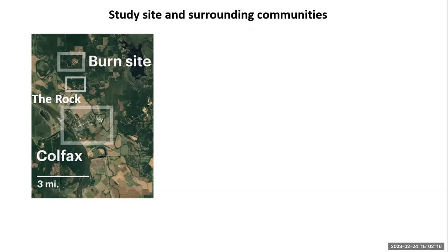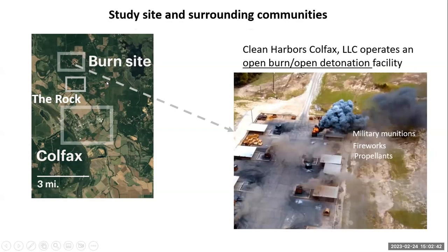I will start by introducing my research project site in Colfax. Colfax is a small town of about 2,500 people, with 90% of them living below the poverty line. Near Colfax, there is another small community called The Walk. In the neighborhood of these two communities, there is an open burn, open detonation facility that treats hazardous waste, including military munitions and ordnance, fireworks, and other explosive materials.